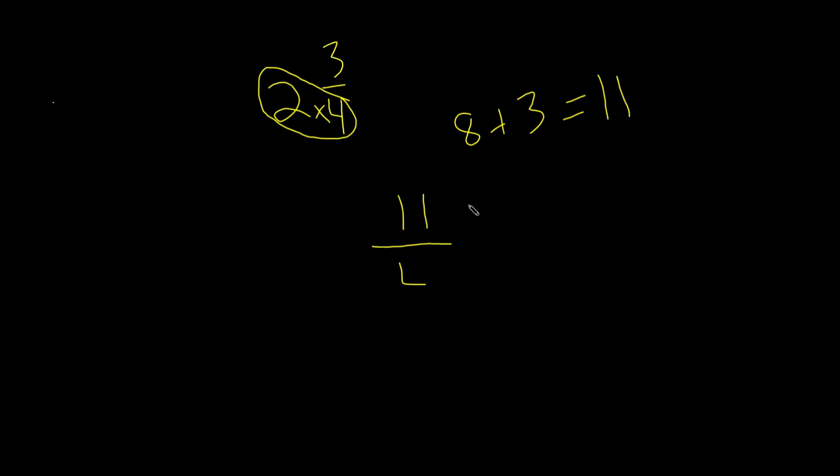Now let's do another problem here. Let's convert the mixed number 4 and 4 fifths to an improper fraction. Well, remember, the first thing to do is to multiply these two. So we're going to multiply 4 and 5, and that gives us 20.